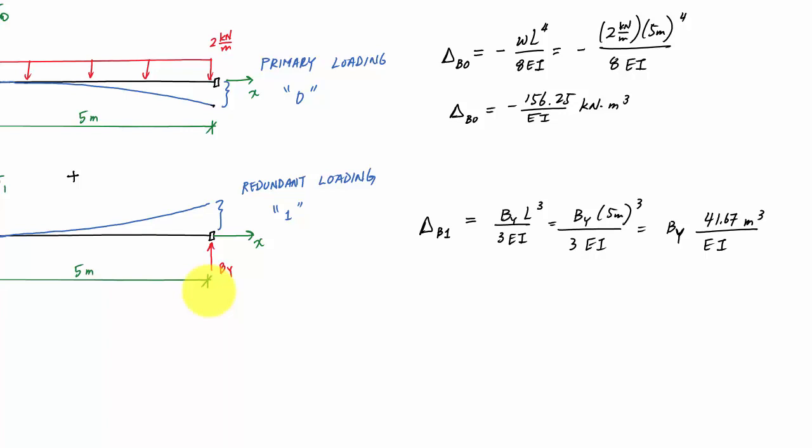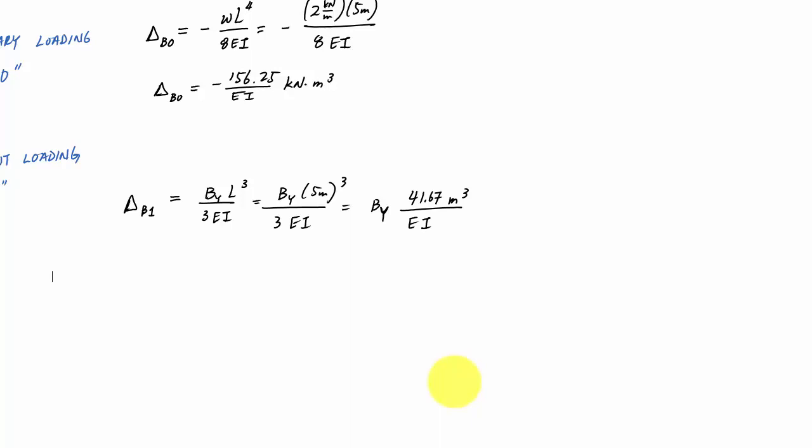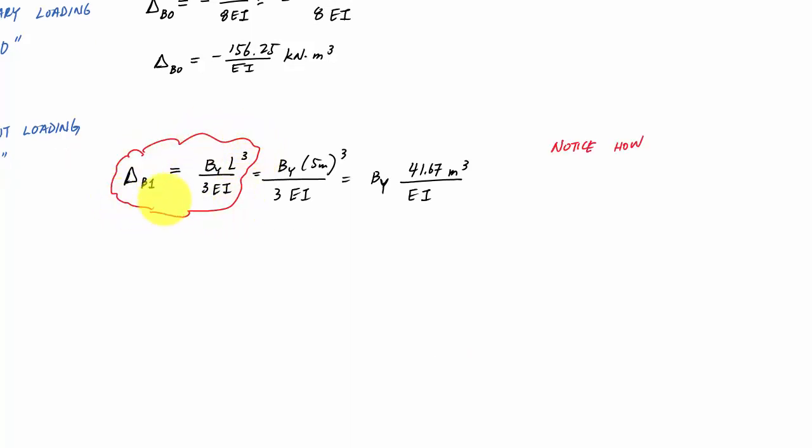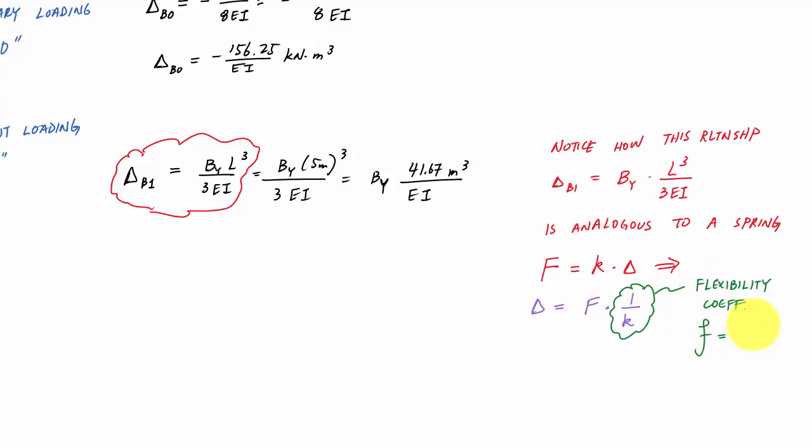Now, I want you to notice something here. You'll notice how the format of delta B1, and we'll spend a few minutes just examining delta B1. If I take this, and I just kind of separate out some of the variables, look at how this has kind of an analogy to a spring, in that right here, I can do like a force. This is something you probably know. Force is equal to the spring constant, or stiffness coefficient, times delta for the displacement. If I rearrange it, it will look like my displacement relationship at B for the redundant loading. Here, this delta is equal to the force times 1 over k. And this right here, this inverse of this stiffness coefficient, we call this a flexibility coefficient.